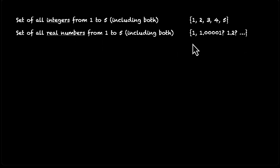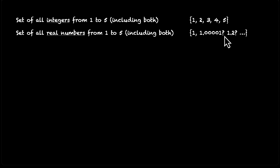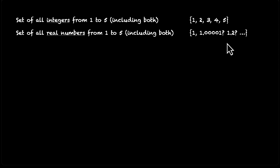You can put in the brackets and start writing the numbers. You can put in 1 as your starting point, but what's the next number? Is it 1.00001, or is it 1.0000001? Is it 1.2? How do you write infinite points? Well, there is a way, and that's called intervals.